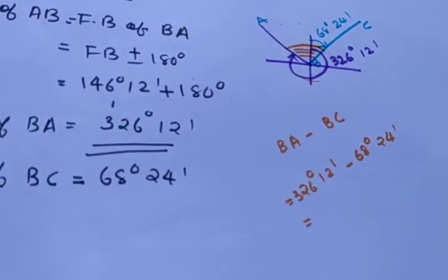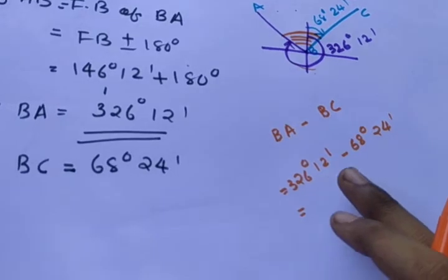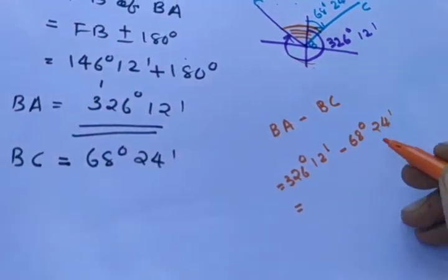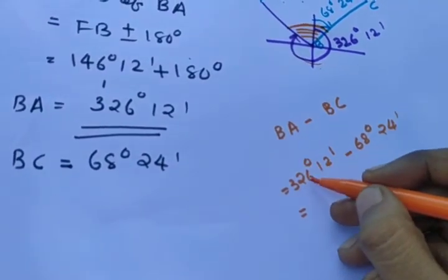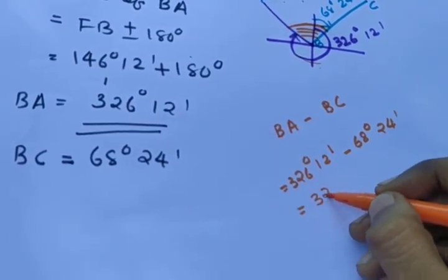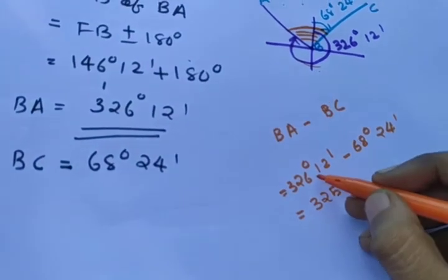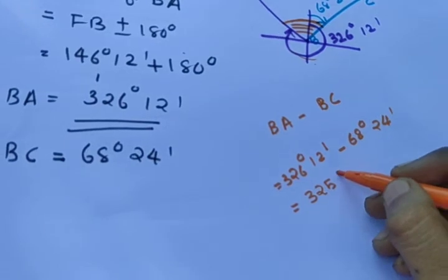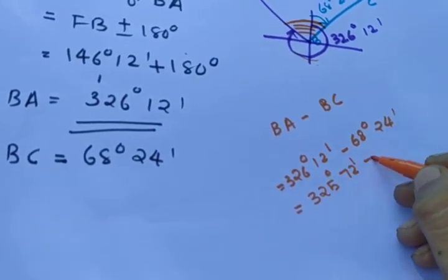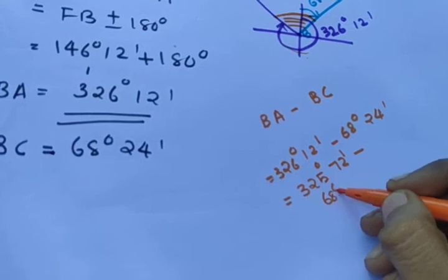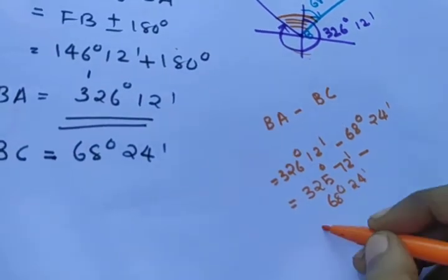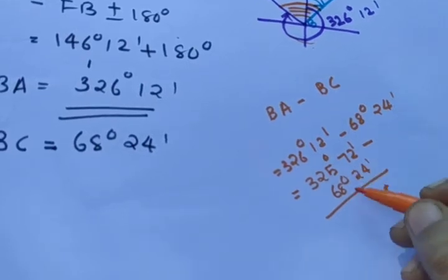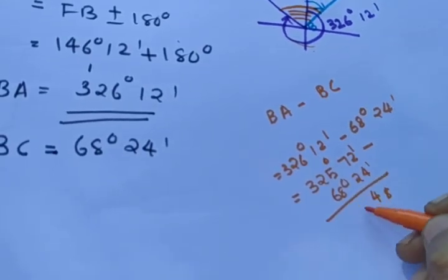326 degrees 12 minutes minus 68 degrees 24 minutes. This gives a result. We borrow: 1 degree equals 60 minutes, giving 72 minutes. Minus 68 degrees 24 minutes. The result is 257 degrees 48 minutes.